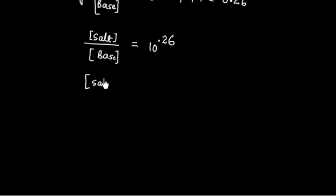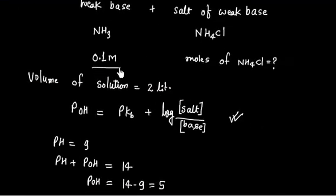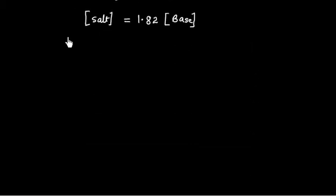So concentration of salt by concentration of base, this is 1.82 times concentration of base. Concentration of base is known, that is ammonia is 0.1M. So concentration of salt, this is 1.82 times 0.1. So we will have 0.182.